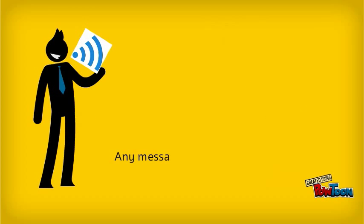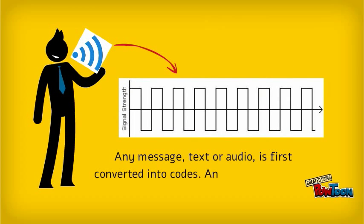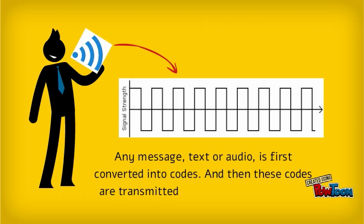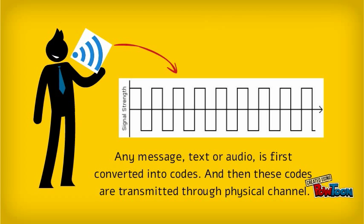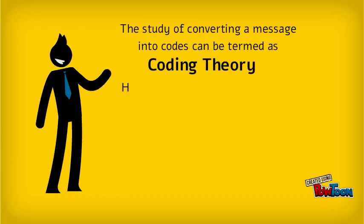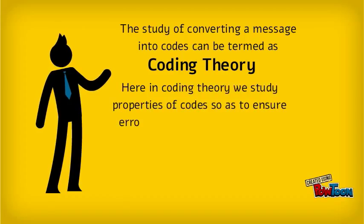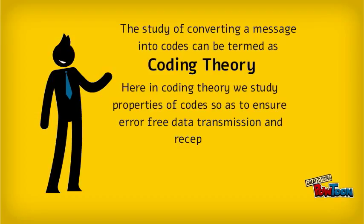Any message, text or audio, is first converted into codes, and then these codes are transmitted through a physical channel. The study of converting a message into codes can be termed as coding theory. In coding theory, we study properties of codes so as to ensure error-free data transmission and reception.